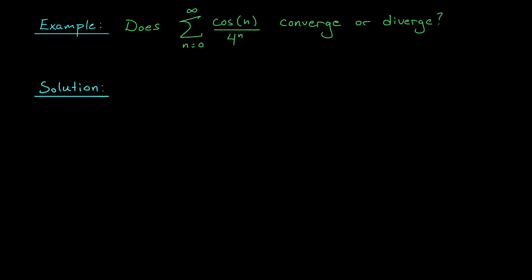This proposition can come in handy when testing the convergence of certain series. Consider for example the sum of terms cos(n) over 4^n. Note that this series is not made up of positive terms, because cos(n) can take on negative values. So the comparison test, the limit comparison test, and the integral test are all out. We also don't have an alternating series here — the first two terms are positive, the next three are negative, the next three are positive — so we can't use the alternating series test. One thing we could try is to show that this series converges absolutely, and if it does, then it must also converge.